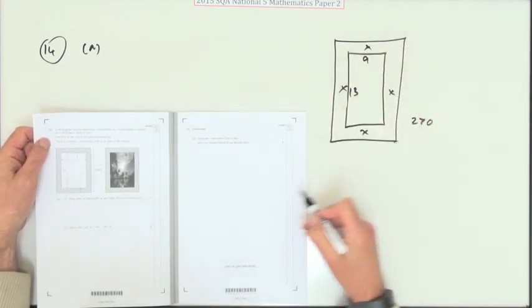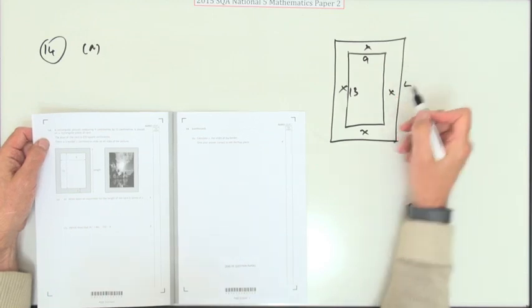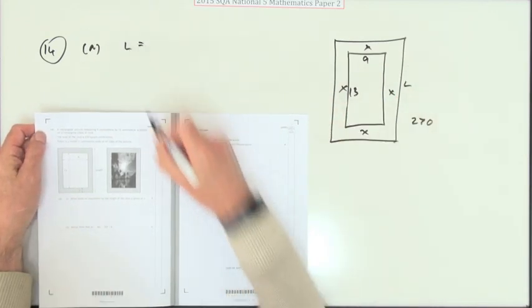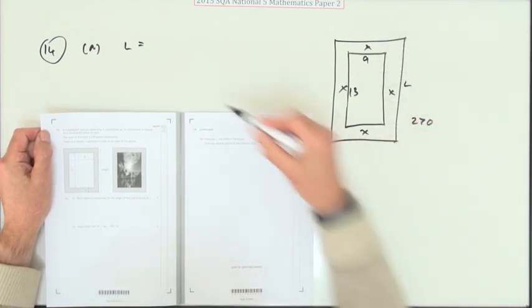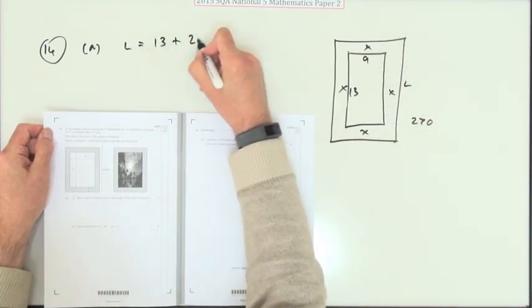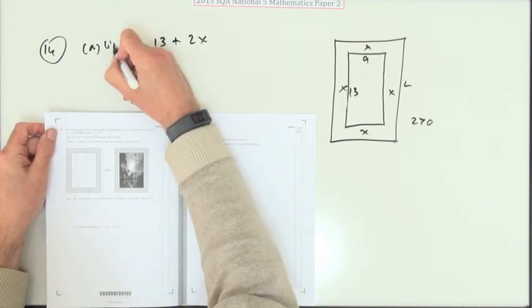Write down an expression for the length of the card. I'm actually saying the length is this one. So the length is going to be, well, it's 13 plus an X and an X. So it's 13 plus 2X. Is that it? That's it. One mark.